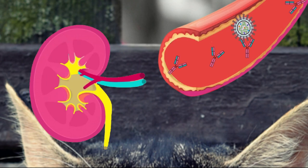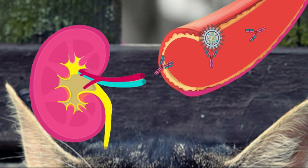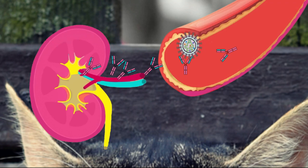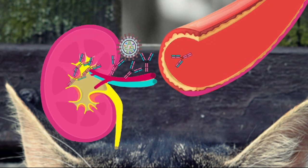These immune complexes circulate through the blood and at some point must be eliminated. They reach the renal glomerulus in an attempt to pass through and be eliminated through the urine. However, they cannot be filtered through the renal glomerulus, so the immune complexes accumulate and are deposited, affecting the glomerulus, producing inflammation, and ultimately kidney failure.